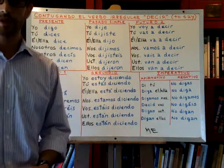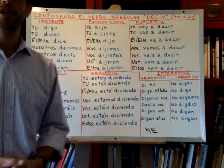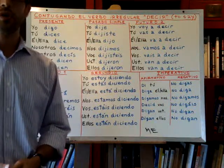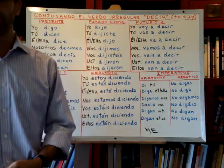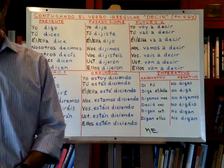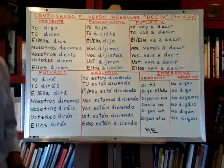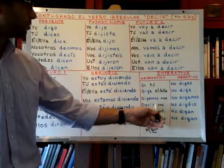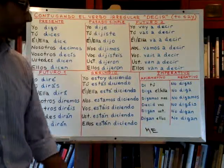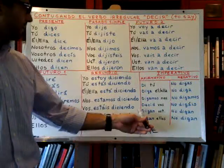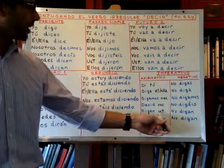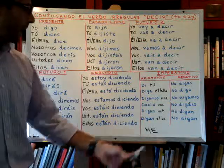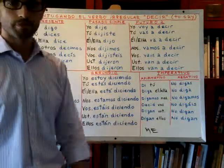Digamos que sí means 'let's say yes,' or digamos que no iremos means 'let's say that we won't go.' Then we have decid for vosotros — you plural — and digan for ustedes, also you plural.